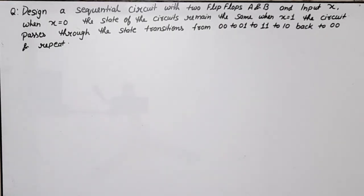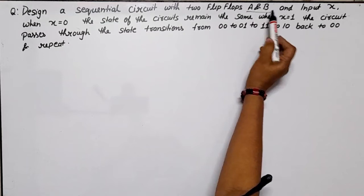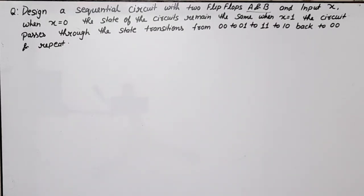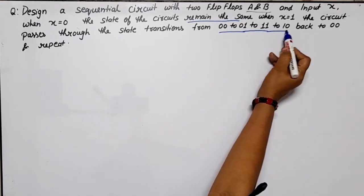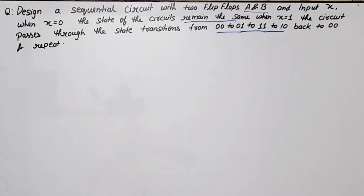Hello everyone. In this video lecture on digital electronics and digital system design, I am going to discuss a question of sequential circuit designing. I have taken this question from the AKTU paper 2020-21. The question is: design a sequential circuit with two flip-flops A and B, and one input X. When X is equal to zero, the state of the circuit remains the same. When X is equal to one, the circuit passes through the state transitions from 00 to 01, 10, 11, back to 00, and repeats.